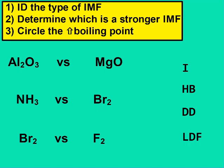Go ahead and pause the video and try these just like we did before. Identify the type of IMF found in each of these six compounds, determine who's stronger out of each pair, and then circle the one with the higher boiling point.